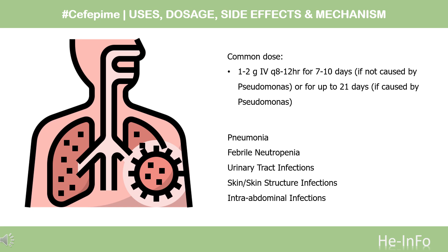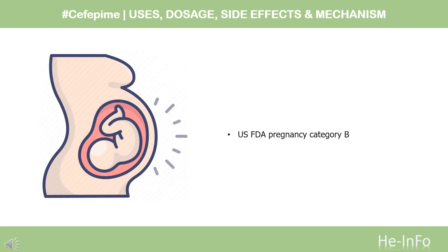Intra-abdominal infections: Treatment of complicated intra-abdominal infections, use in combination with metronidazole, 2g IV Q12 hours for 7–10 days. Safety Advice: US FDA Pregnancy Category B — animal reproduction studies have failed to demonstrate a risk to the fetus, and there are no adequate and well-controlled studies in pregnant women.